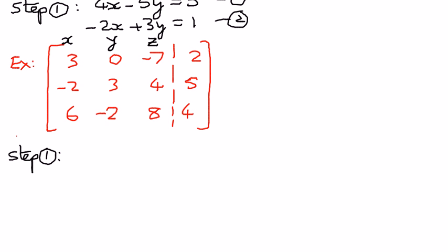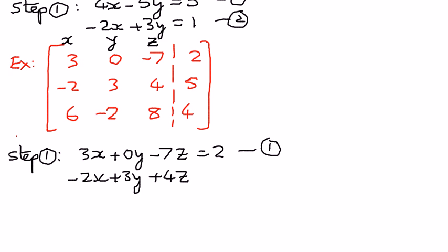So, we will start writing this system of linear equations now. For the first equation, it will be 3x plus 0y, or we do not need to even write that, but we will just write it out for now. 3x plus 0y minus 7z is equal to 2. That is our first equation. The second equation is negative 2x plus 3y plus 4z is equal to 5. That is our second equation.